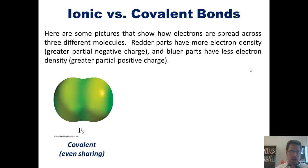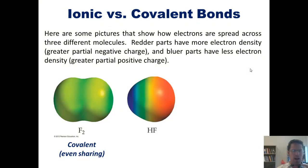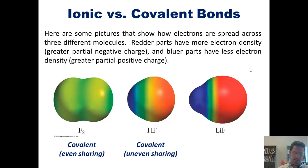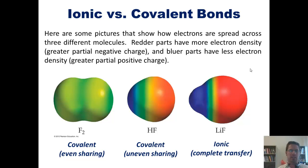In our second example, HF or hydrofluoric acid, the H and F atoms also share each other's electrons. Unlike F2, however, H and F do not share those electrons evenly, making this a covalent bond with uneven sharing of electrons. In our third example, LiF or lithium fluoride, the lithium atom has more or less completely transferred its single valence electron to the fluorine atom. This type of bond is called an ionic bond because there's a complete transfer of electrons, leaving two individual ions: a lithium positively charged cation and a fluoride negatively charged anion.